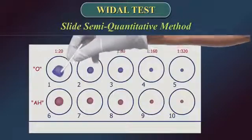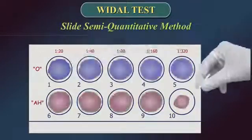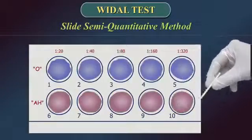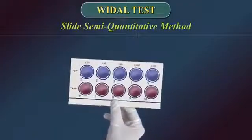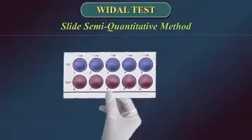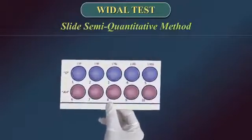Using separate mixing sticks, mix the contents of each circle uniformly over the reaction circles. Rock the slide gently back and forth. Observe for agglutination macroscopically within one minute.